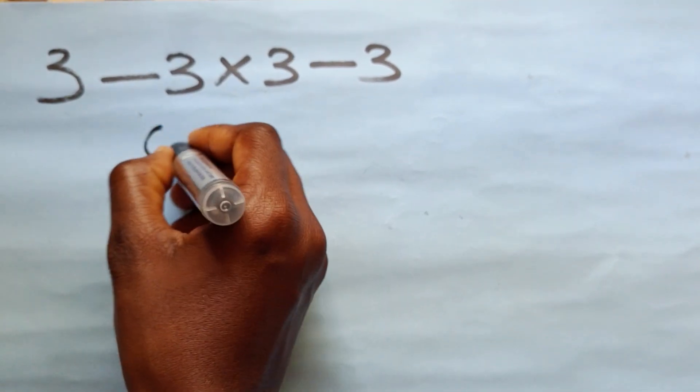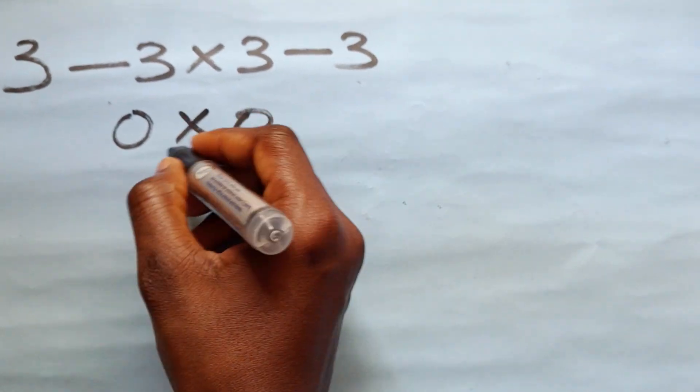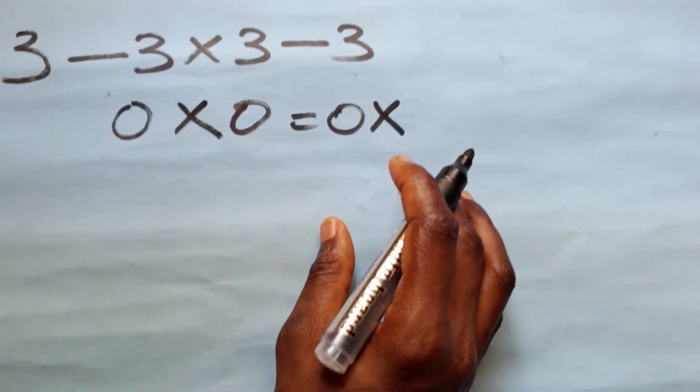3 minus 3 is 0, multiplied by 3 minus 3 is 0. 0 times 0 gives us 0. This is incorrect.